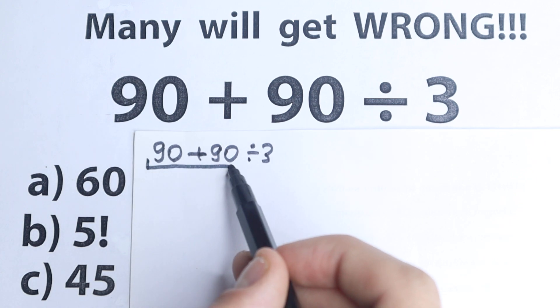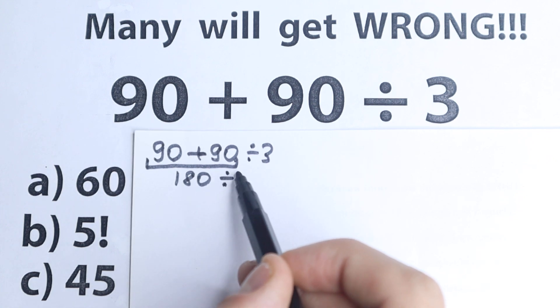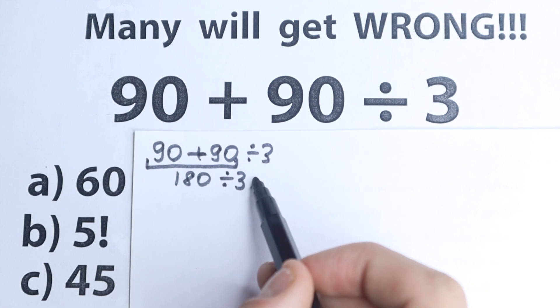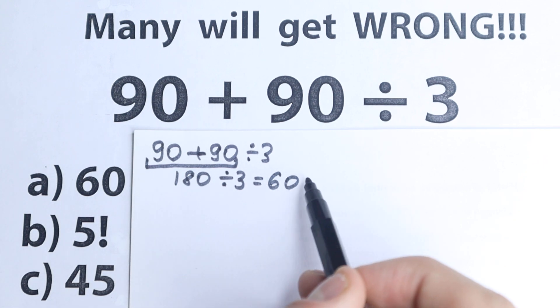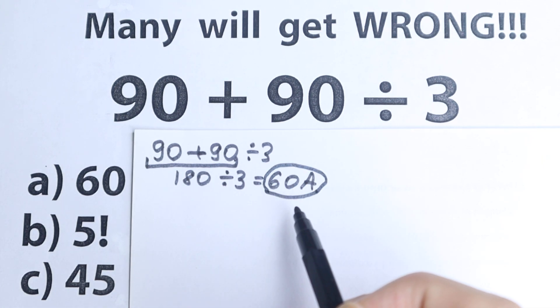They say, okay, 90 plus 90 equal to 180, and 180 divided by 3, we still have division, so equal to 60. We have this option A which is the first one, so obvious solution this is option A.